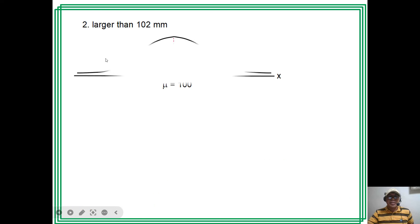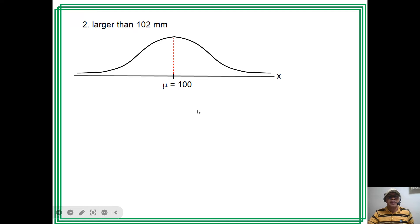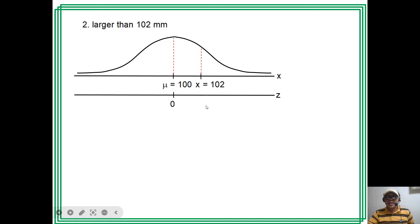For question 2, the probability that the pipe has a diameter larger than 102 mm: first convert x = 102 to z. Using the formula: z = (102 − 100) / 2 = 1. The required probability is the area to the right of z = 1.